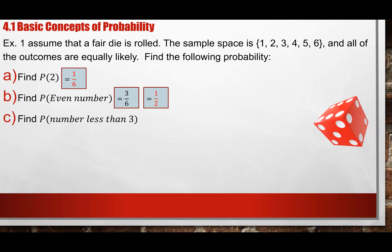They ask you to find the probability that the number is less than three. The tricky part is asking yourself: do we include three? The answer is no — three is not less than three. So we only include one and two. My event is the number less than three, which is numbers one and two — two numbers less than three out of six total, which reduces to one-third.